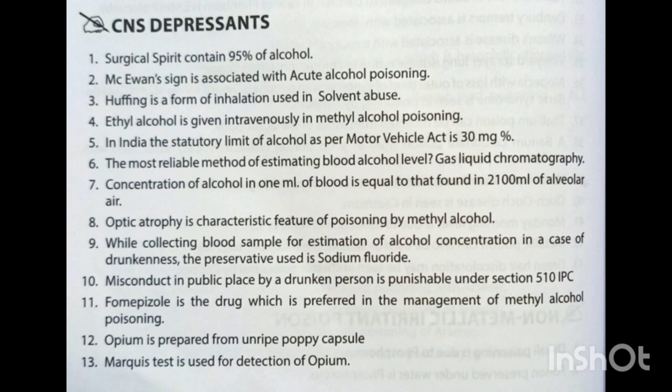Concentration of alcohol in 1 ml of blood is equal to that found in 2100 ml of alveolar air. Optic atrophy is a characteristic feature of poisoning by methyl alcohol. While collecting a blood sample for estimation of alcohol concentration in a case of drunkenness, the preservative used is sodium fluoride. Misconduct in a public place by a drunken person is punishable under Section 510 IPC. Fomepizole is the drug preferred in management of methyl alcohol poisoning. Opium is prepared from unripe poppy capsule. Marquis reagent is used for detection of opium.